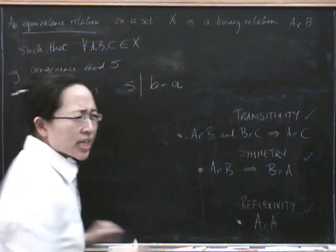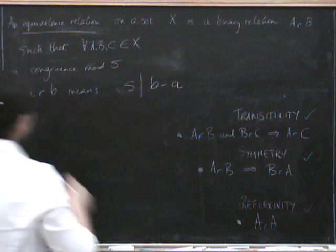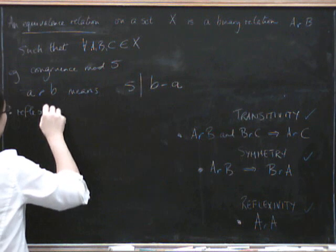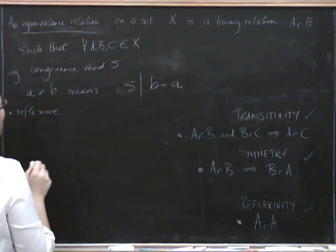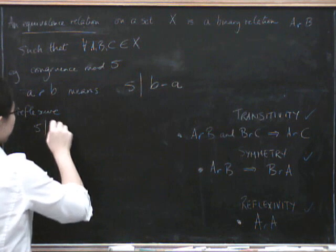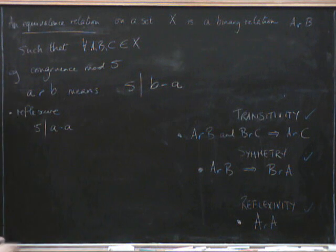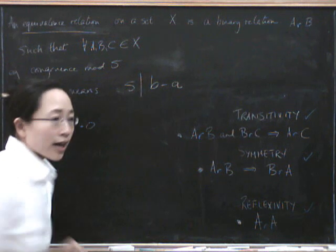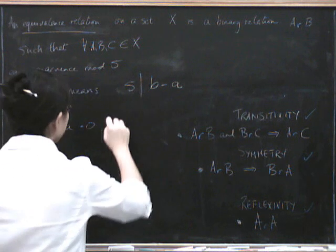Let's try reflexivity first, because it's going to be easier. So to show it's reflexive, we have to show that for all numbers A, five divides A minus A. Well, that's clearly true because A minus A is zero, and five definitely goes into zero, so it is reflexive.